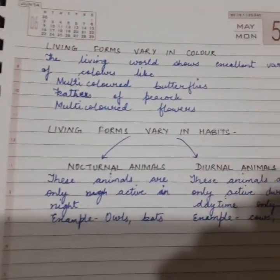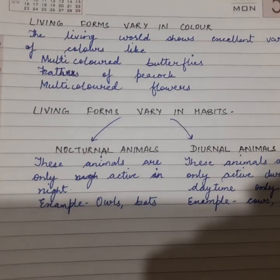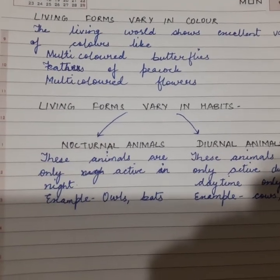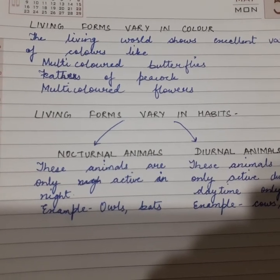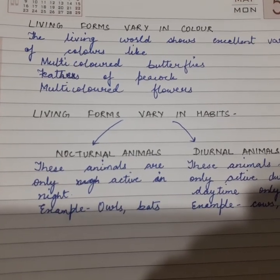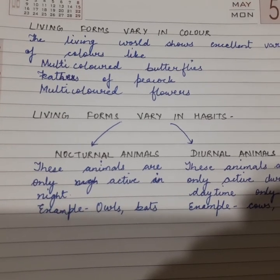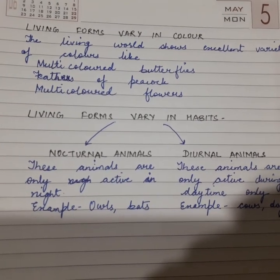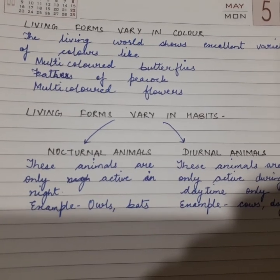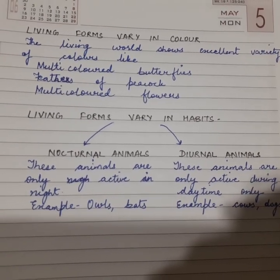Living forms vary in color also. Living forms show an excellent variety of colors, like the wings of butterflies, which are very multicolored. The feathers of a peacock are also very colorful, and the petals of flowers come in many different beautiful colors.